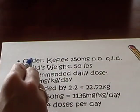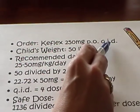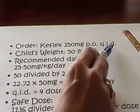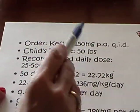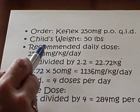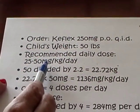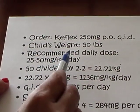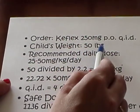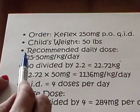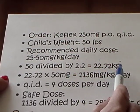Let's work another problem. We have an order for Keflex, 250 milligrams PO QID, which is four times daily. The child's weight is 50 pounds. Our recommended daily dose that we look up in the drug book is 25 to 50 milligrams per kilogram per day. First, we must convert our child's weight of 50 pounds to kilograms. So we divide 50 by 2.2 equals 22.72 kilograms.